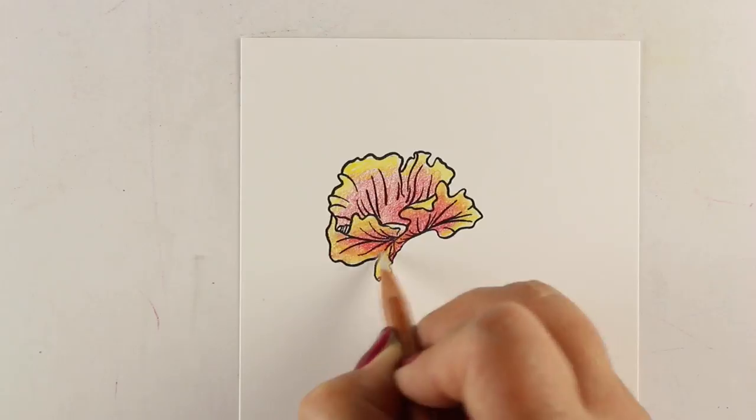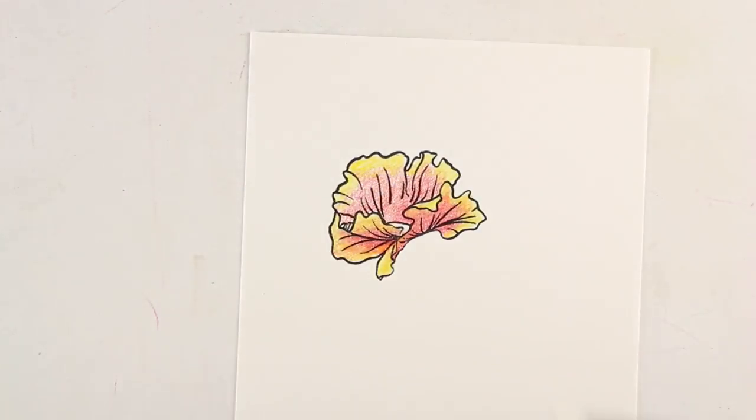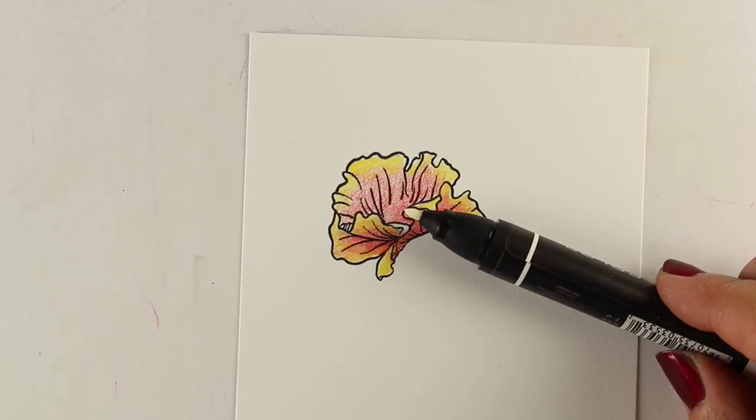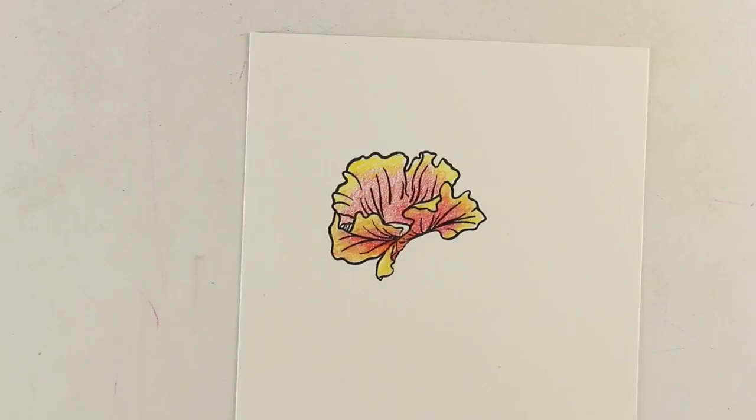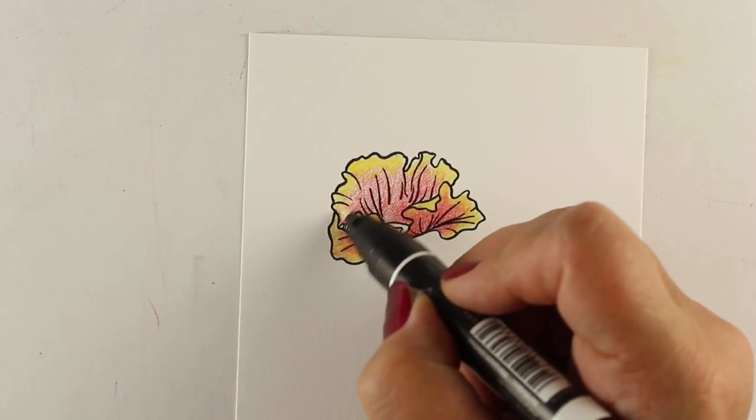For somebody who likes the look of blending just with pencil, this leaves a little more of the texture that I like, so I have a feeling I'll use this a little bit more. This is the blender marker that has two nibs: one is the honking huge chisel nib, and the other is this teeny tiny little writing nib.